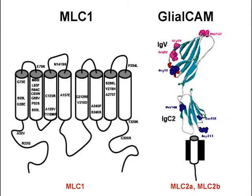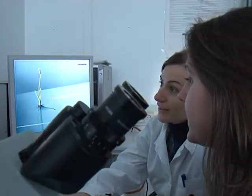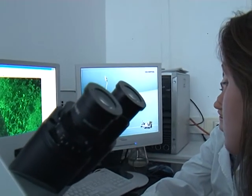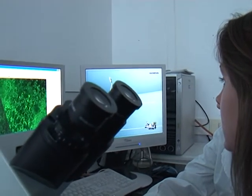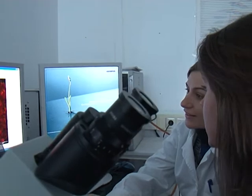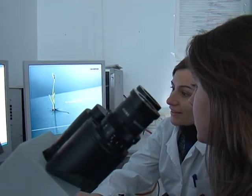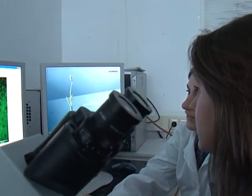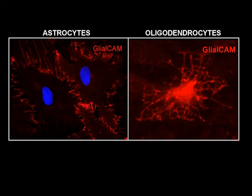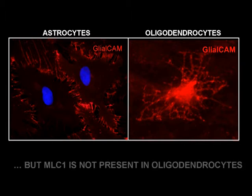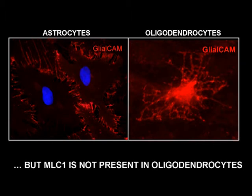After discovering the GlialCAM gene, we looked at which types of cells in the brain expressed GlialCAM, and we found that GlialCAM was present in astrocytes and oligodendrocytes. However, MLC1 is not present in oligodendrocytes, suggesting that GlialCAM may be associated with other proteins in these cell types.